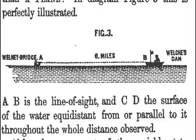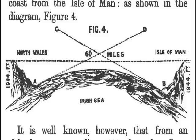Although, on account of the variable state of the water, objections have been raised to experiments made upon the seashore to test the convexity of the flood or ebb tide level, none can be urged against observations made from higher altitudes. For example, the distance across the Irish Sea between Douglas Harbour on the Isle of Man and the Great Ormes Head in North Wales is 60 miles. If the earth is a globe, the surface of the water would form an arc 60 miles in length, the center of which would be 1,944 feet higher than the coastline at either end, so that an observer would be obliged to attain this altitude before he could see the Welsh coast from the Isle of Man. It is well known, however, that from an altitude not exceeding 100 feet, the Great Ormes Head is visible in clear weather from Douglas Harbour.